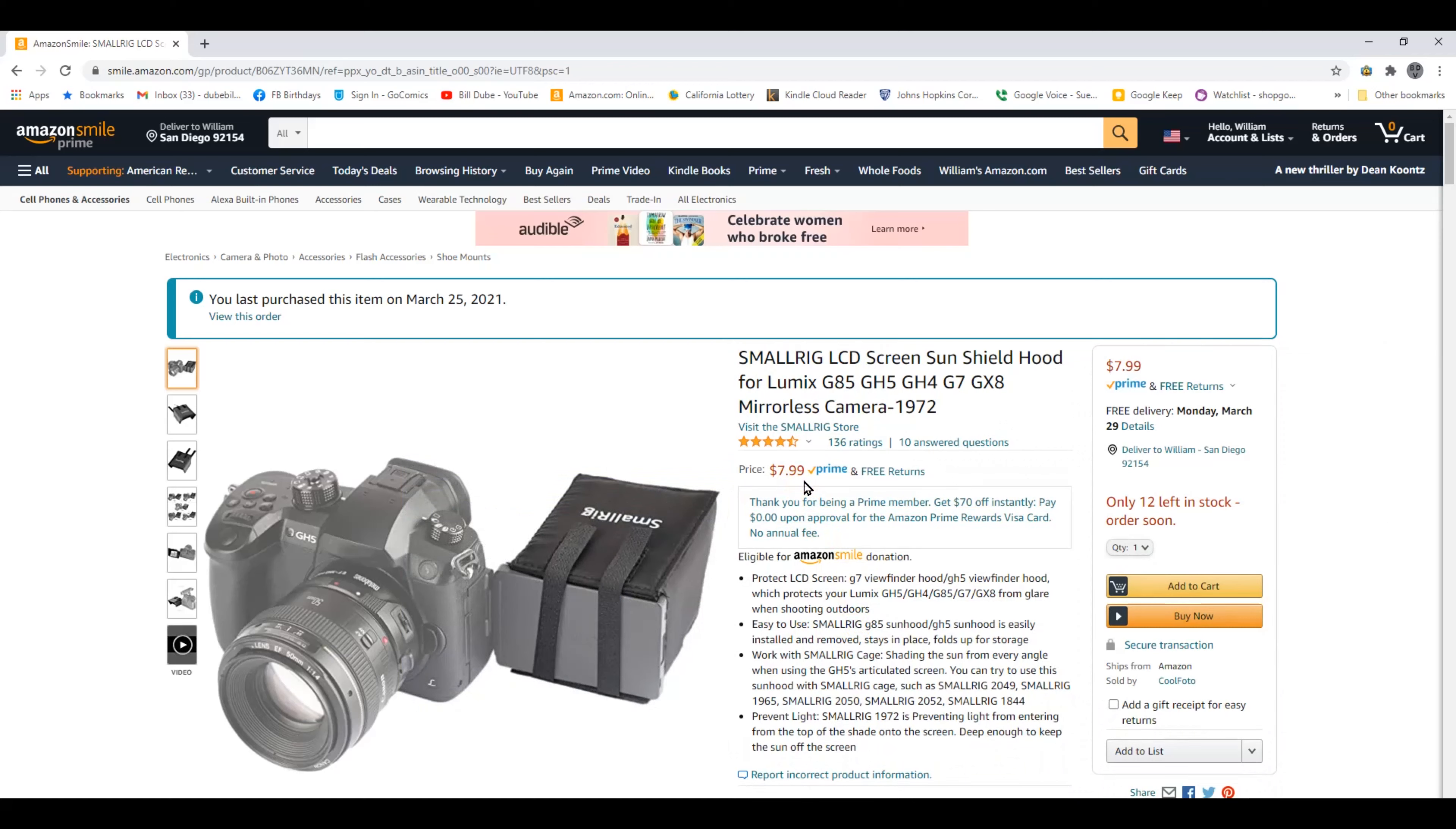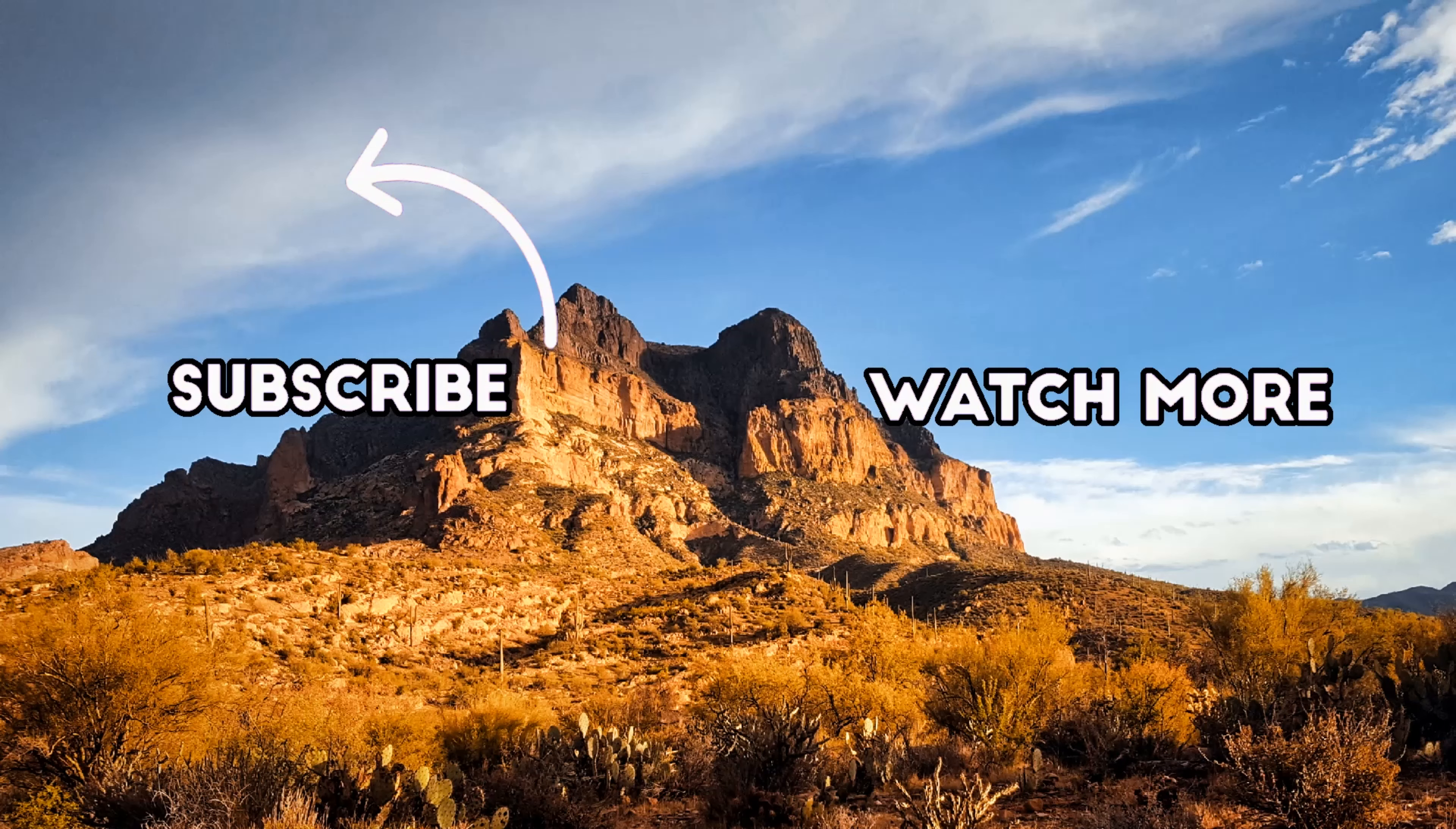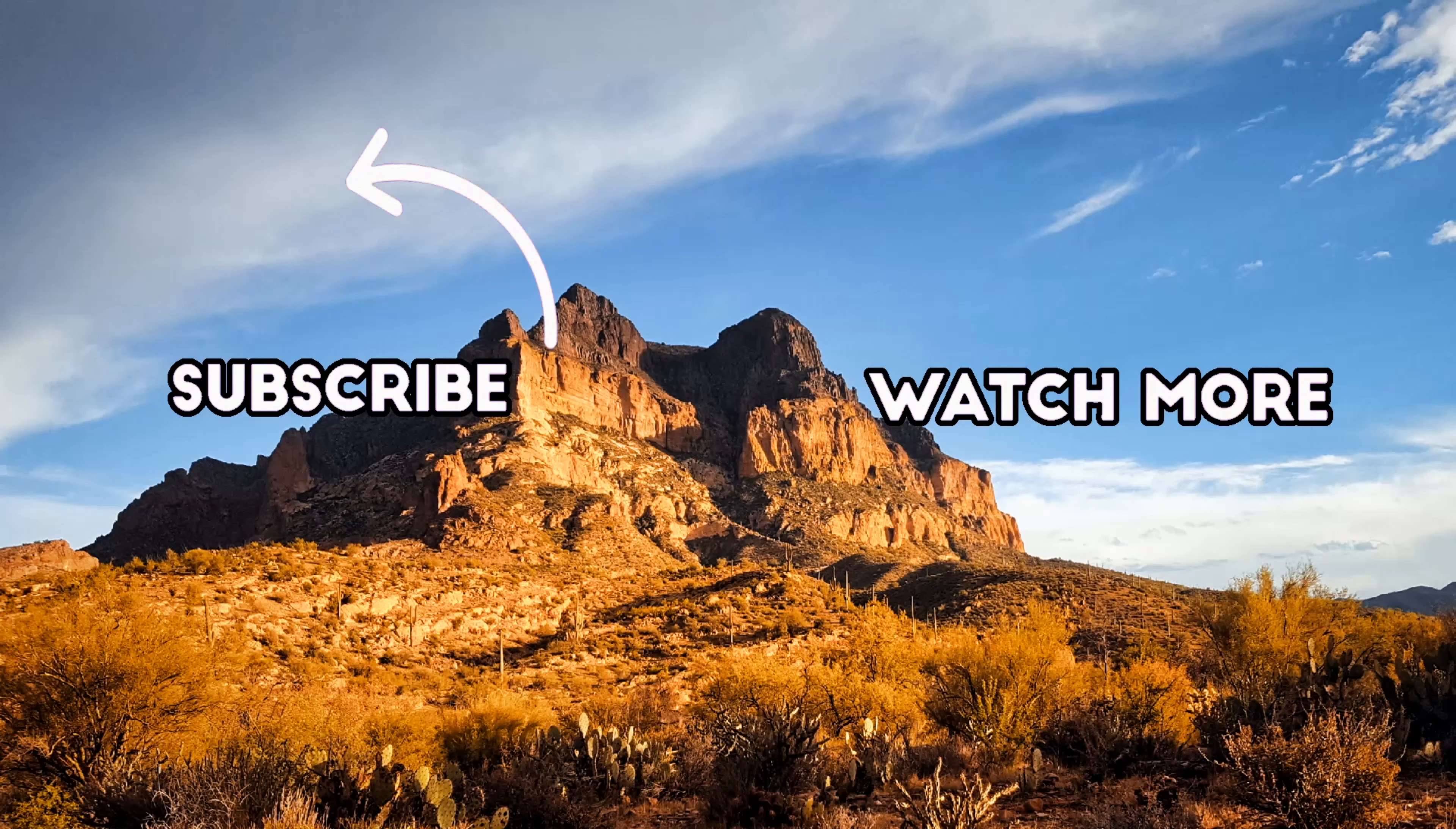After we finished testing our shadow box, which I finally remembered is called a hood, I went on Amazon and searched. And here it is for $7.99. So I bought one. If it doesn't work, we'll have shadow box two. Otherwise, I'll do a review of this one. Thanks for watching.